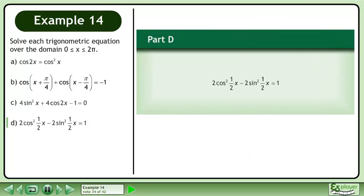In part d, solve 2cos²(1/2 x) minus 2sin²(1/2 x) equals 1.